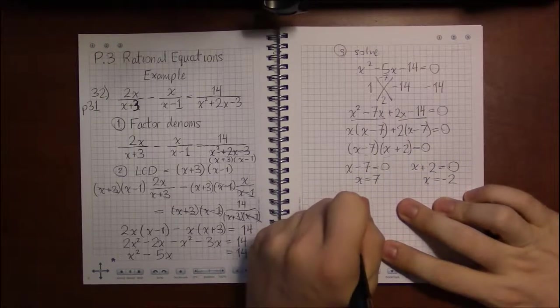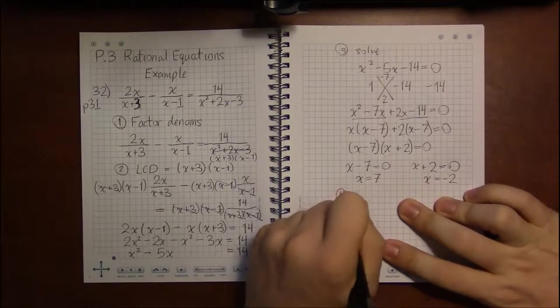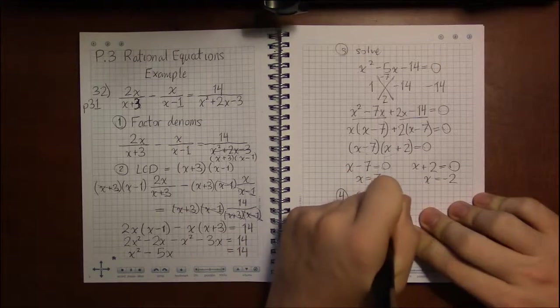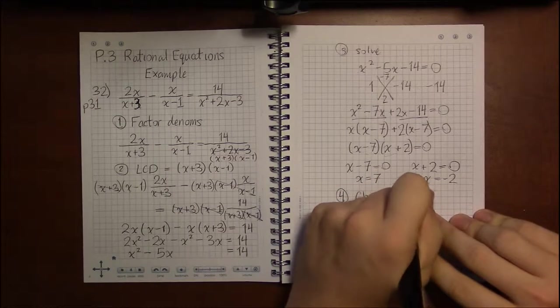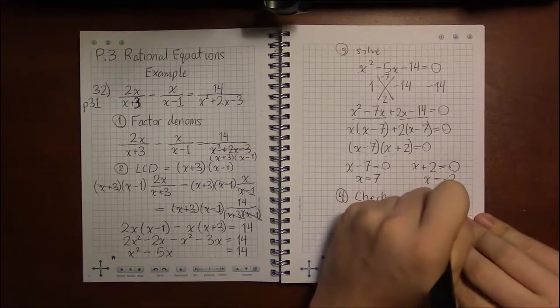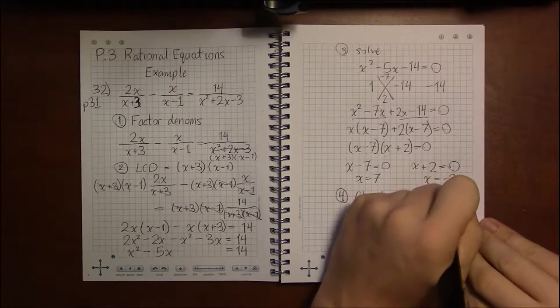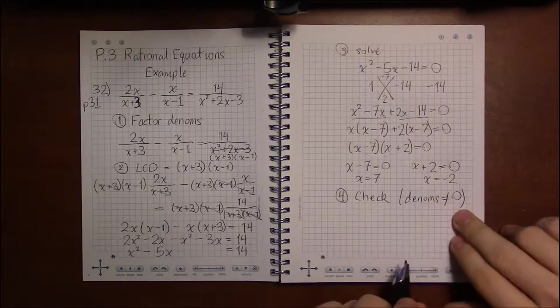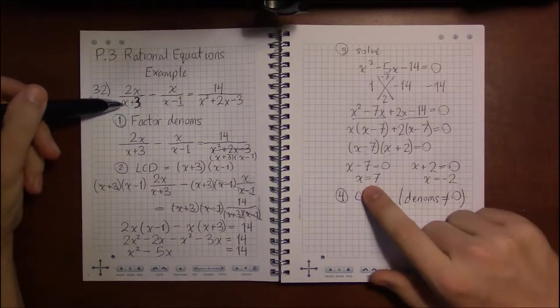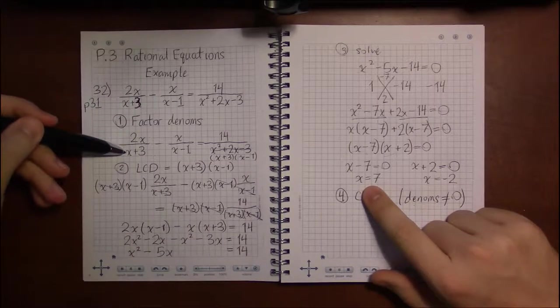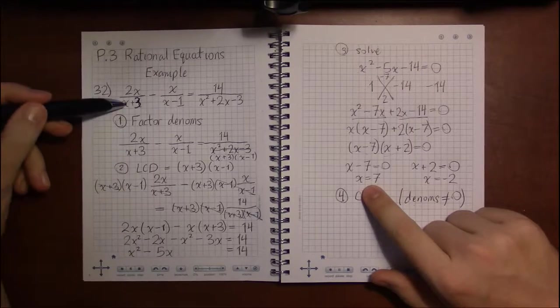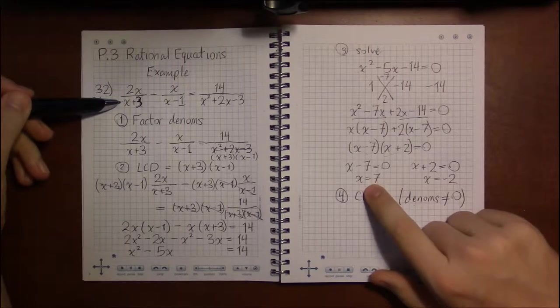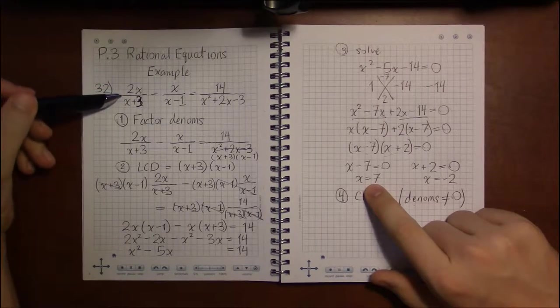Now, you're not done. Not done because you could have some extraneous solutions. It could be the case that when we plug these back in, we don't get a real solution. That's only going to happen if any one of the denominators is zero. So we want all the denominators to not be zero in order to take a solution. Let's see about 7. We can even look at the factored one down here, which might be easier. But either one doesn't matter. I imagine you'll look at the first one, so I'll go ahead and do that one as well.